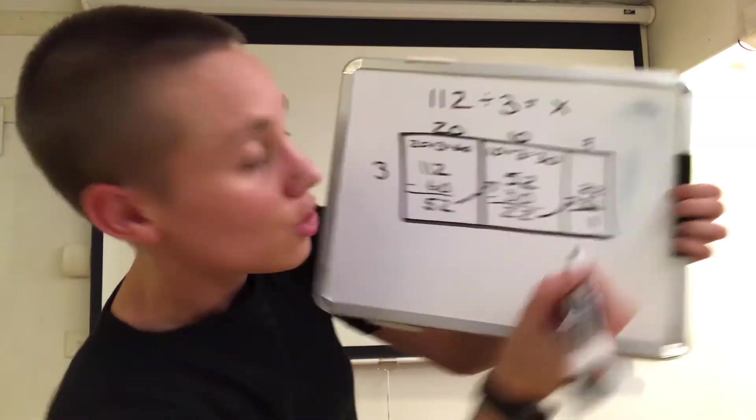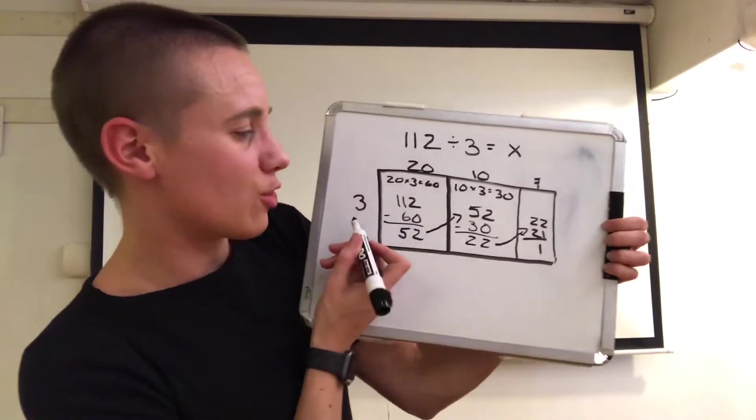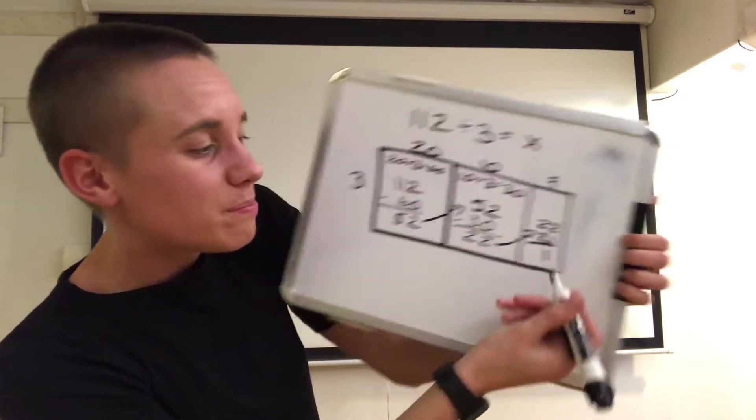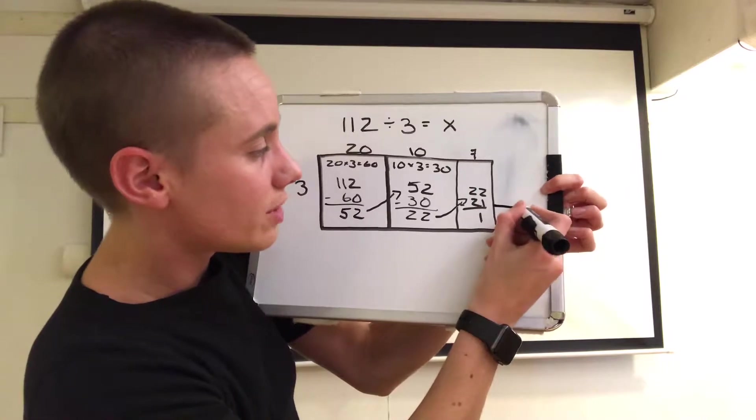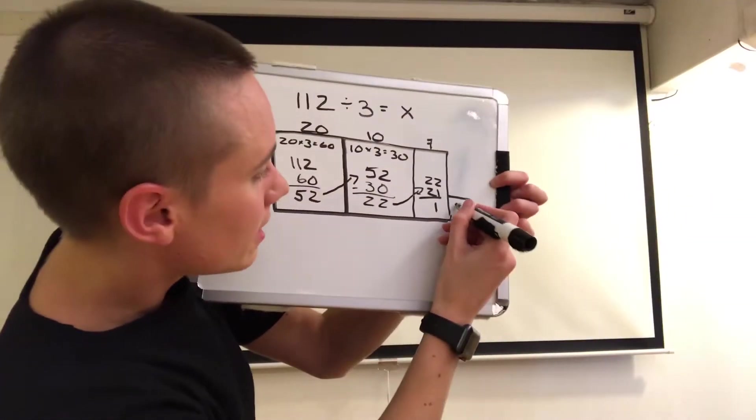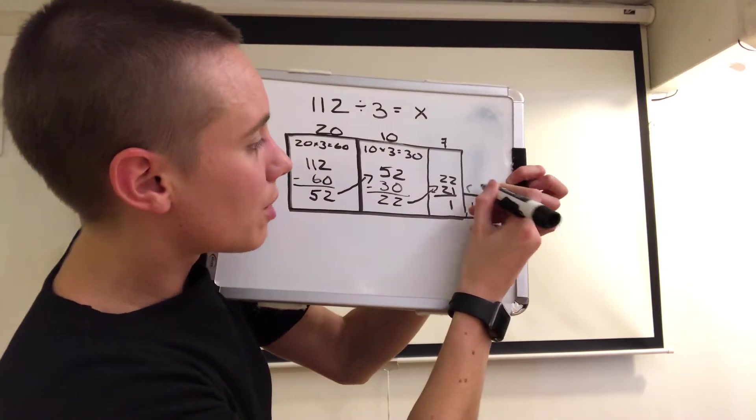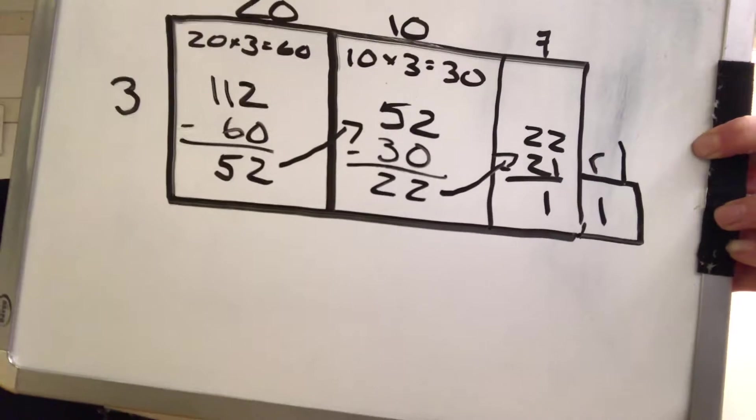And that gives me 1. I look at this 1. I say I can't make a group of 3 with 1 because 1 is less than 3. So this 1 ice cube is left over. I'm going to draw it over here. And we call that our remainder. So I'm just going to write R1 right there for remainder 1.